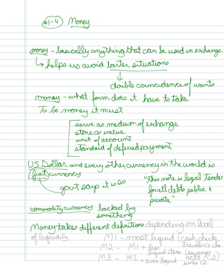Now, money takes different definitions depending on its level of liquidity. By that I mean M1 is the most liquid. Meaning that when we say liquidity, we basically mean that it is as good as cash.